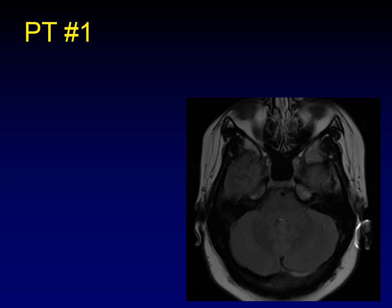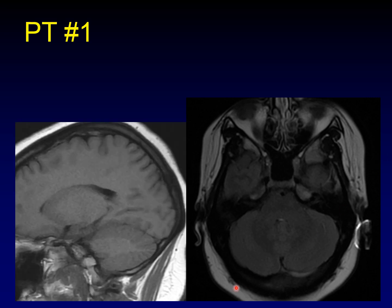Let's double check that on T1 weighted sequences. I love looking at T1 weighted sequences for flow void in the transverse sinuses. It's perpendicular to the plane of imaging, so it's really sensitive for flow void. And there is a lack of flow void in that transverse sinus right where we're seeing the abnormal FLAIR signal.